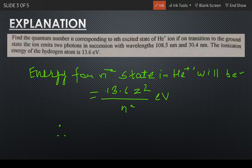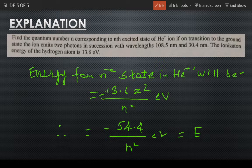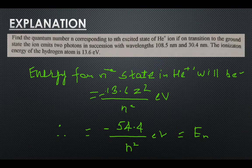Will be equal to minus 54.4 upon n squared electron volts. Substituting the value of z, we get the final equation for the nth state will be minus 54.4 upon n squared.